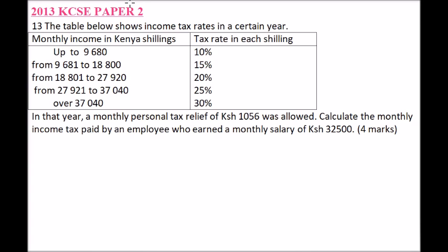Starting with the first bracket: up to 9,680 you are taxed at the rate of 10%, which is the same as 0.1. Multiplying 9,680 by 0.1 gives you 968. This is the tax on the taxable income in the first bracket.